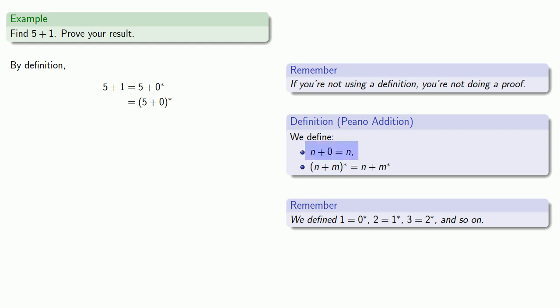But wait, there's more. We know what 5 plus 0 is because that's part of our definition. In addition, 5 plus 0 is the same as 5. And so the successor of 5 plus 0 is the same as the successor of 5, and that is the natural number 6.